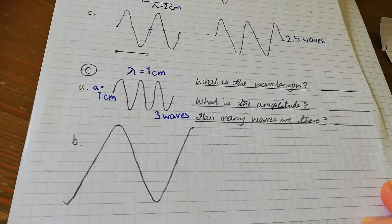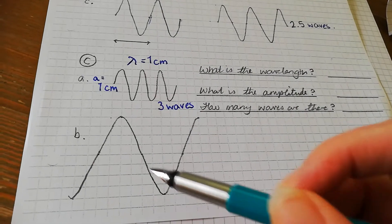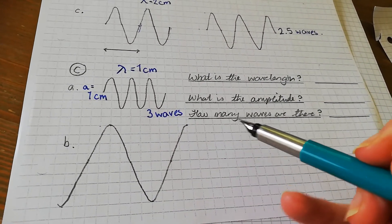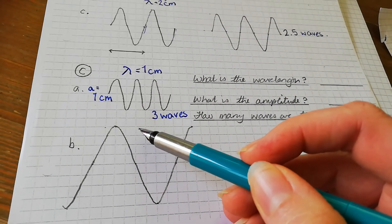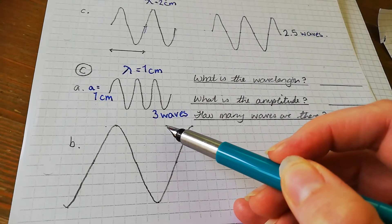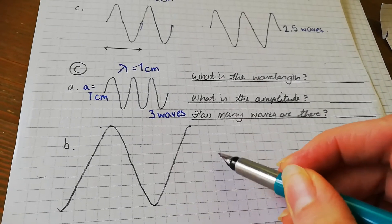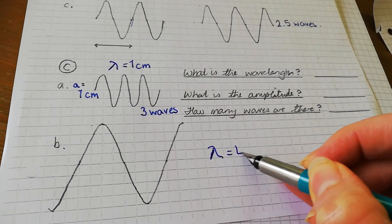Now looking at the same questions for this diagram here, what is the wavelength? Pause the video again and answer the three questions. One, two, three, four, five, six, seven, eight boxes, so the wavelength is four centimeters.